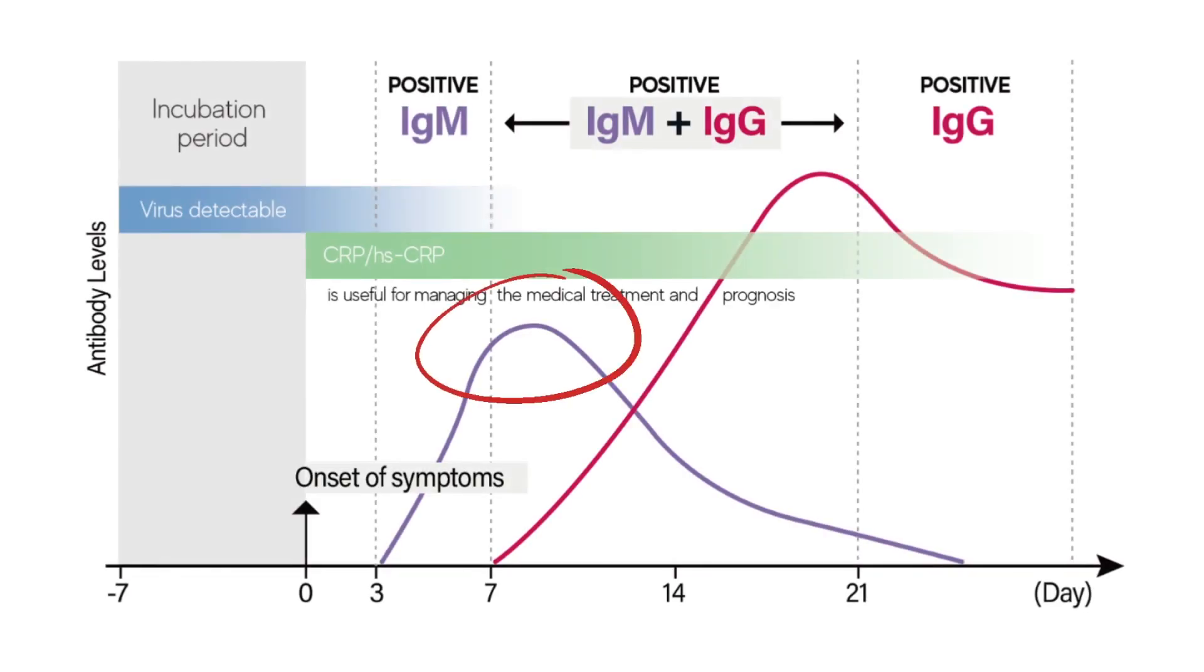Immunoglobulin M is a pentagon shape and your body can make it relatively quickly. You will notice the purple arc of immunoglobulin M comes up in about a week and then it goes down. It's pretty much gone by about the three, four week mark. So most doctors will say an IgM is an active acute infection.